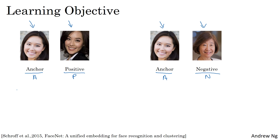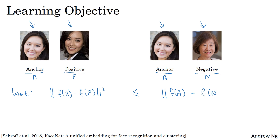To formalize this, what you want is for the parameters of your neural network or for your encodings to have the following property: you want the encoding of the anchor minus the encoding of the positive example to be small — in particular, less than or equal to the squared norm between the encoding of the anchor and the encoding of the negative, where this is d(A, P) and this is d(A, N). You can think of d as a distance function, which is why we named it with the alphabet d.